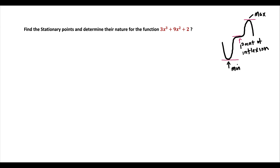Welcome to Excel and Maths. Today we'll be looking at how to find a stationary point of a function and how to determine the nature. Before we do that, I'd like to refer to the curve on the right and quickly remind you what a stationary point is. A stationary point is where the gradient function is equal to 0 — in other words, dy/dx is equal to 0. So when we differentiate this function, at that point the function is equal to 0.